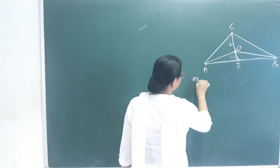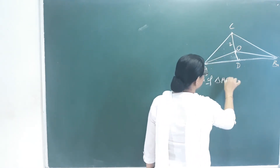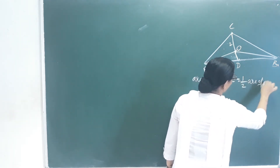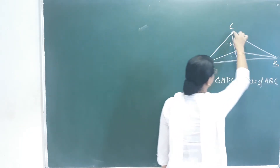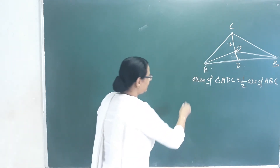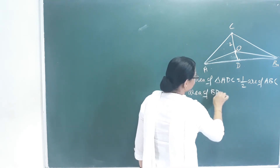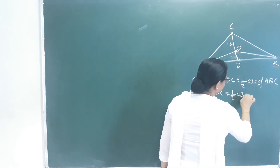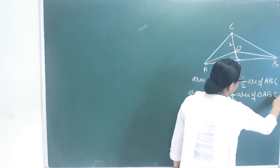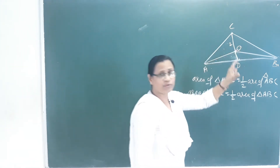First, area of triangle ADC is equal to half of area of ABC, because D is the midpoint of BC. So triangle ADC is half of ABC, and similarly triangle ABD is half of ABC.